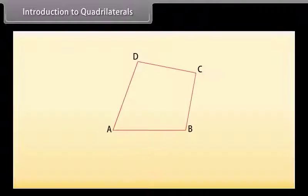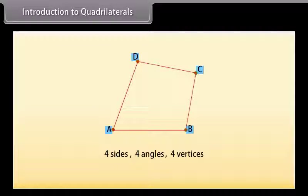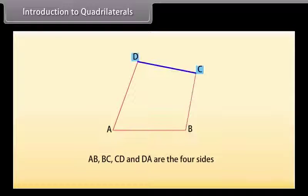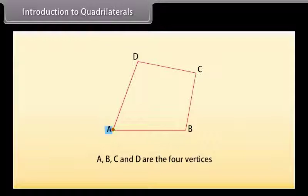Introduction to quadrilaterals: Look at the figure ABCD — this is a quadrilateral. A quadrilateral has four sides, four angles, and four vertices. Here AB, BC, CD, and DA are the four sides; angle A, angle B, angle C, and angle D are the four angles; and A, B, C, and D are the four vertices.